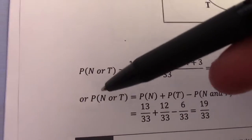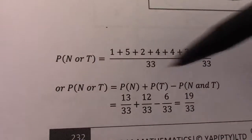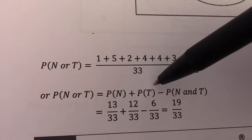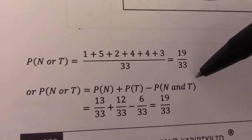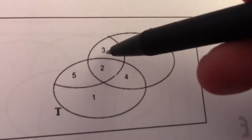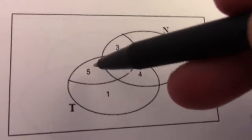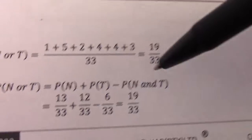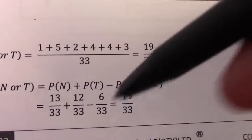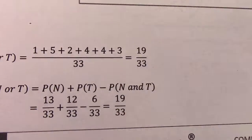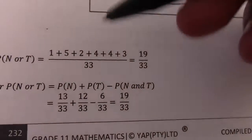If we calculate netball or touch rugby using the addition rule: P(N) plus P(T) minus P(N and T). P(N) is 13 over 33, P(T) is 12 over 33, and P(N and T) is 4 plus 2 equals 6 over 33. This also gives 19 over 33, so either way we get the same answer.